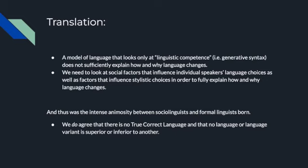And thus was born the intense animosity between sociolinguists and formal linguists, which persists to this day and I don't know if it'll ever die out. One thing we can agree on, however, is that there is no one true correct language, and that no language or language variant is superior or inferior to another.